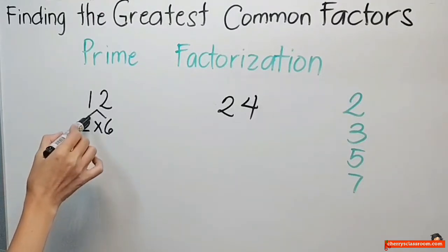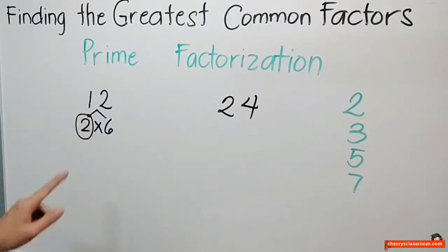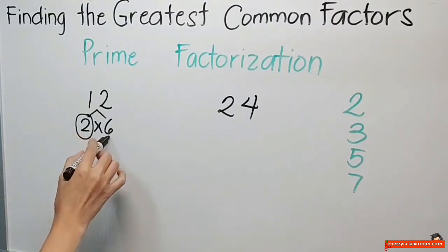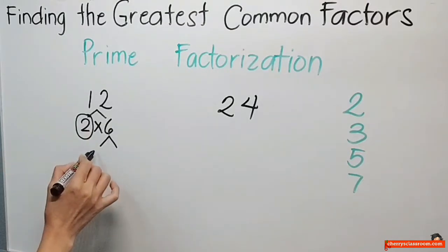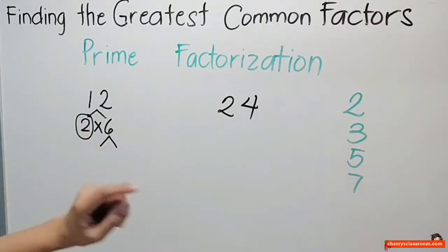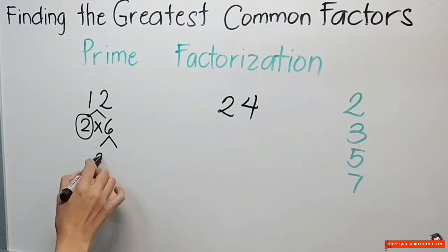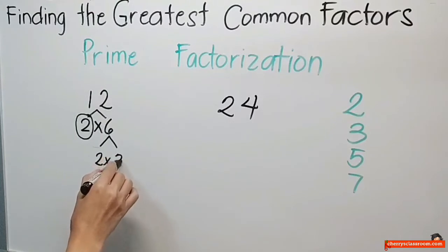So, pipinugan ko ngayon ang 2 kasi ang 2 ay prime na. Ang 6 ay hindi pa prime. Kaya, ngayon, mag-iisip ako ng number, ng prime number, na pwede kong i-divide sa 6. 2 pa rin, pipiliin ko pa rin ang 2. Pwede ko rin piliin ang 3 dito sa 12, di ba? 2, anong number, mag-multiply ko sa 2 na ang sagot ay 6? Yan ay 3. So, 2 times 3 equals 6.